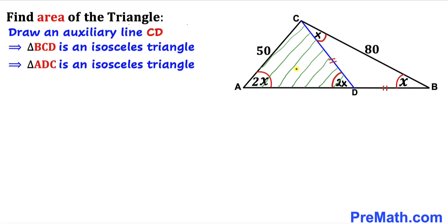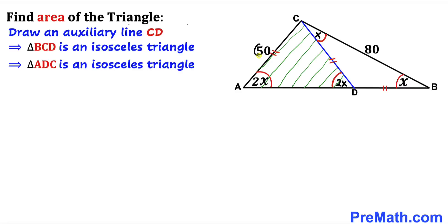We can see that triangle ADC is also an isosceles triangle since angle ACD equals angle BAC, which is 2x. Therefore side length CD equals side length AC. So all three side lengths AC, CD, and BD are equal, and since AC is 50, CD and BD are each 50 units as well.